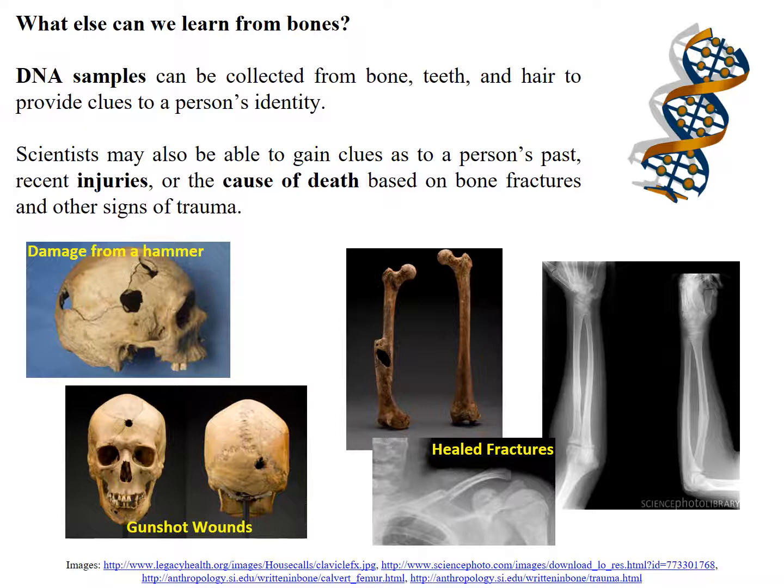Looking at the images, we have one showing damage from a hammer — large open holes. Then we have a gunshot wound: a very narrow, clearly defined hole at the entry and a more open fragmented hole at the exit wound. We can also see healed fractures, showing where someone previously fractured a bone — this is often how multiple fractures on x-rays can indicate childhood abuse. Look at the x-rays to find the locations of the original fractures.